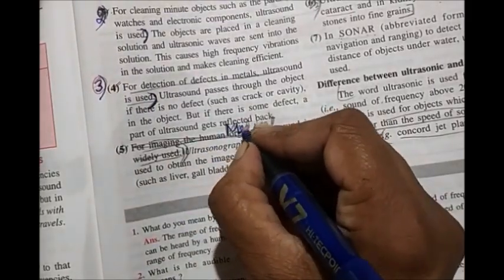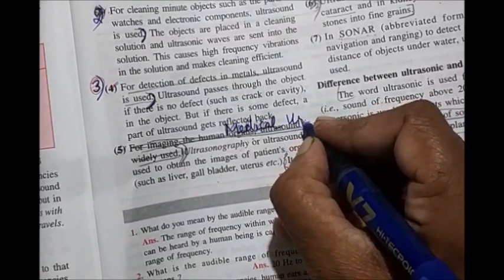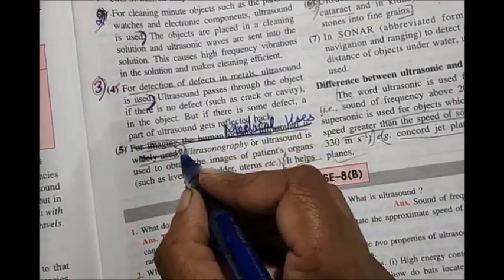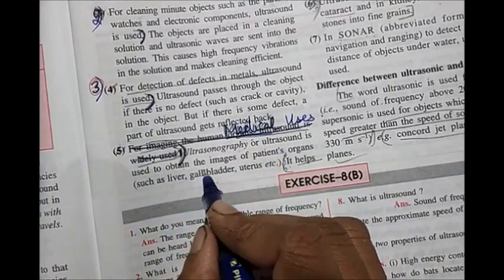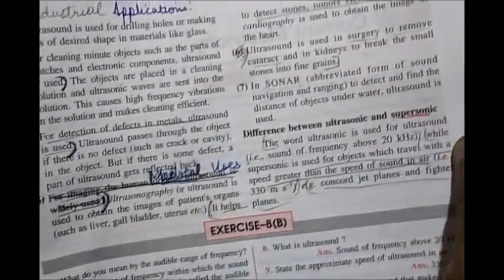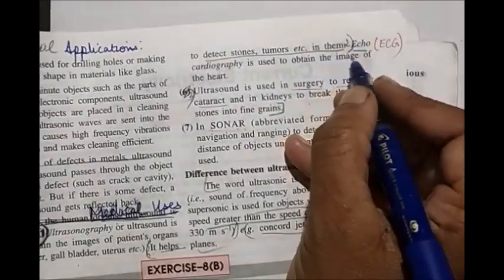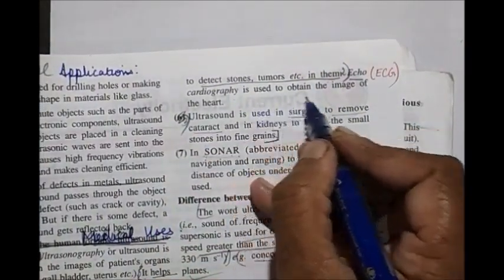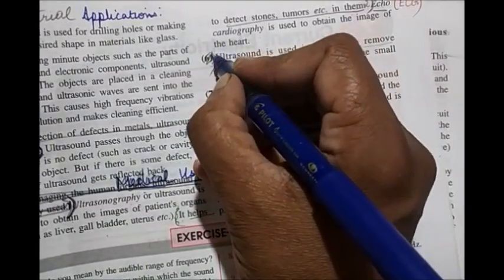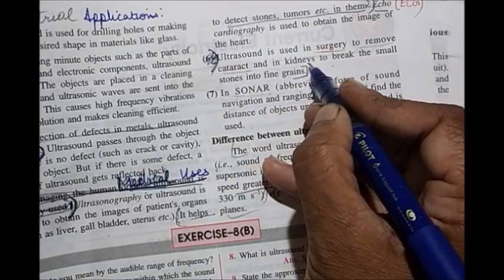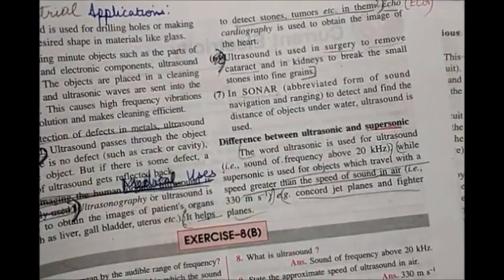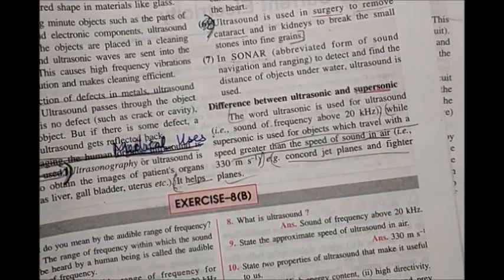Write the heading: medical applications. Point one: ultrasonography — ultrasound is used to obtain images of a patient's organs such as the liver and gallbladder; it helps to detect stones, tumors, etc. Point two: echocardiography (ECG) — used to obtain the image of the heart. Point three: ultrasound is used in surgery to remove cataracts and in kidneys to break small stones into fine grains. So you have three industrial uses and three medical uses.